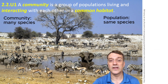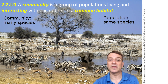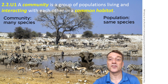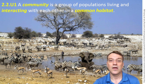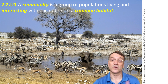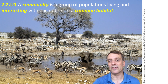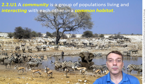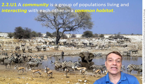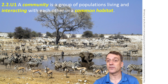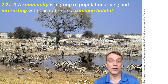In ESS, a community is a group of populations living and interacting with each other in a common habitat. Think about a watering hole in Africa where zebras, elephants, and various antelope species all gather. They form a community by sharing the space and influencing each other's lives through competition, through predation, and other interactions.